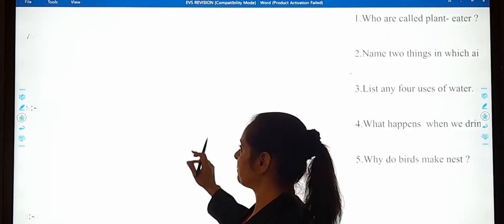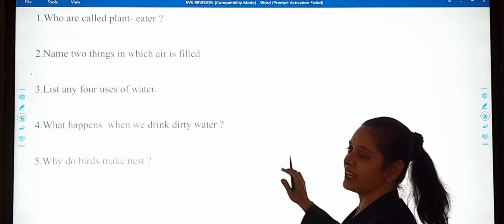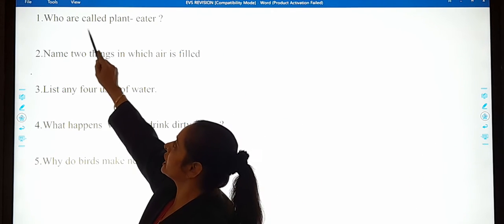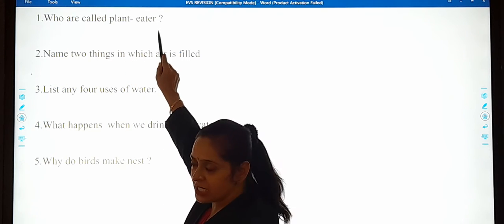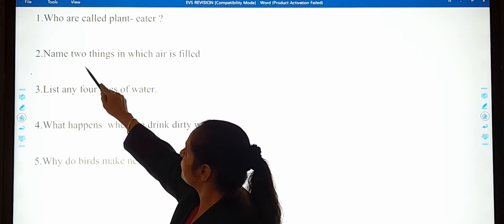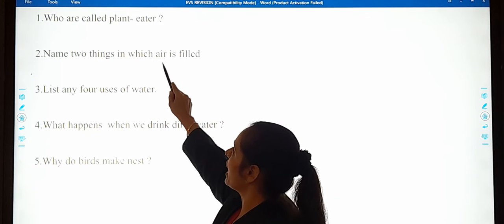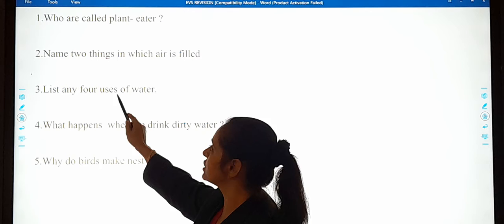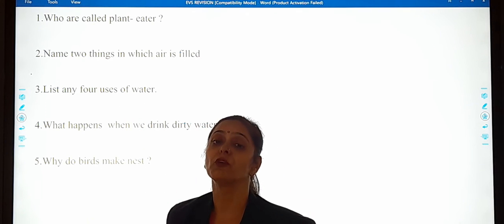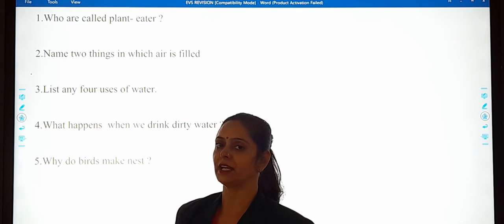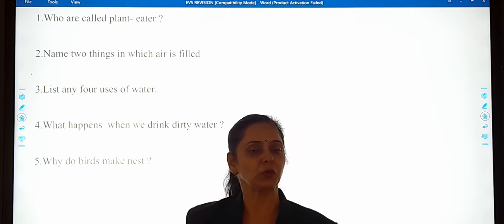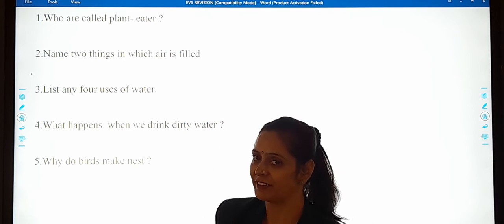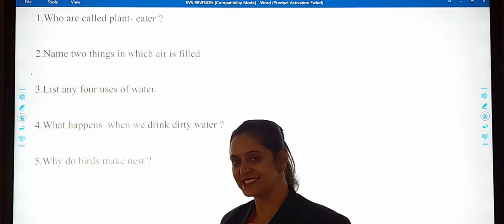Now the fifth part will be question and answers. Who are called plant eaters? Name two things in which air is filled. List any four uses of water. Aap ko water ke four uses batana hai. We use water for cooking, washing, bathing hai na. You have done no? For drinking, isn't it?